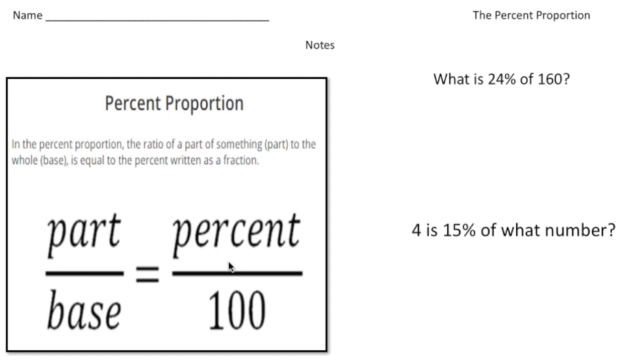So let's take a look at the actual proportion. Here we have percent over 100 equals the part over the base. Now I'm going to cross off the word base and write total, or you could say whole as well. So let me just jump right in—we're actually going to set up a problem based on this proportion and then we'll solve for it.